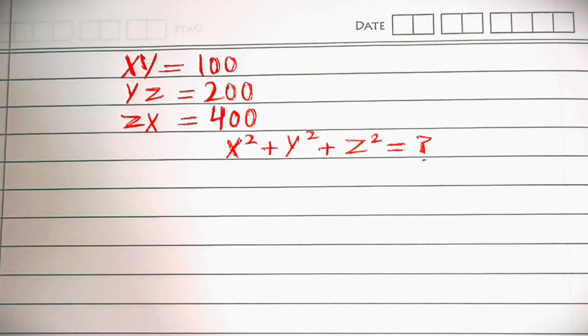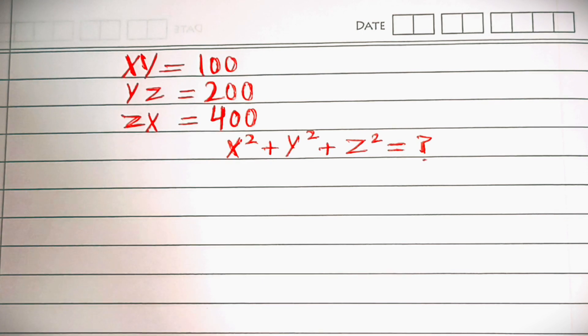Hello, we have xy equal to 100, yz equal to 200, and zx equal to 400. So we need to find the value of x squared plus y squared plus z squared.